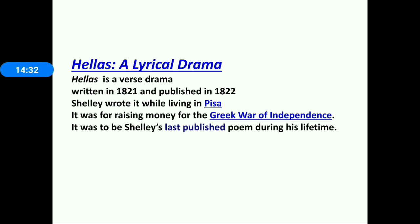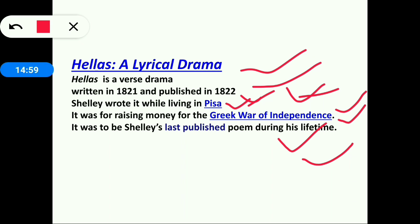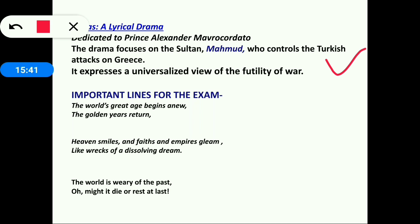Hellas: A Lyrical Drama is a verse drama written in 1821 and published in 1822, while Shelley was living in Pisa. It was written for raising money for the Greek War of Independence — a kind of charity. It was to be Shelley's last published poem during his lifetime. Hellas is dedicated to Prince Alexander Mavrocordatos. The drama focuses on Sultan Mahmud, who controls the Turkish attack on Greece, and expresses a universalized theme of the futility of war.